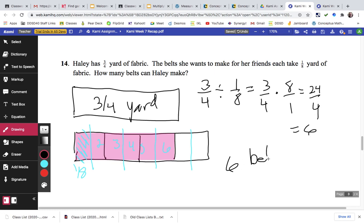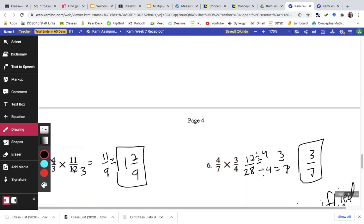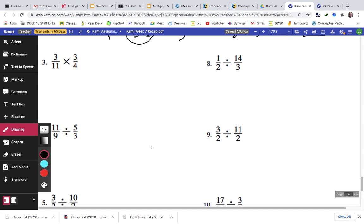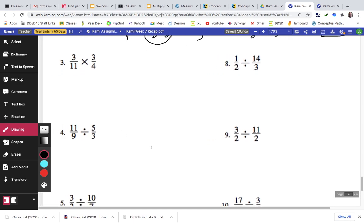So the answer is 6. She could make 6 belts. Then we picked up problems 3, 4, 8, and 9 in class. This is equal to 9/44 and that doesn't simplify.